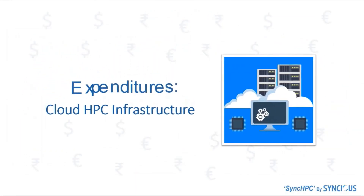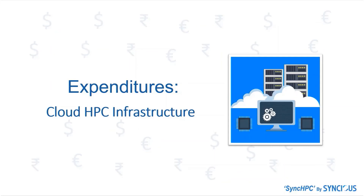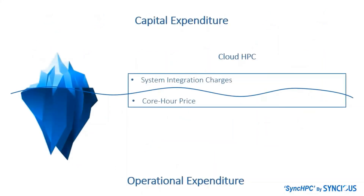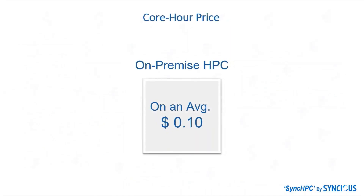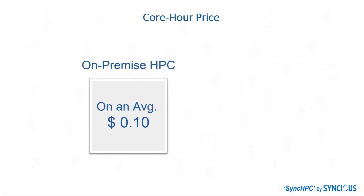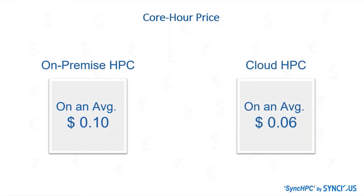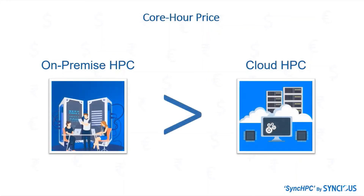Now understand the expenditure and other aspects of cloud HPC infrastructure. These are the only aspects of cloud HPC infrastructure's expenditure. After this complete discussion, you can compare the expenditures of on-premise HPC and cloud HPC infrastructure. We have already calculated the core per hour price for on-premise HPC. On the other hand, cloud HPC is an on-demand, pay-as-you-go service that could charge you around $0.06 per core per hour. By considering all the aspects, we can definitely say that cloud HPC could be 60% cheaper than on-premise HPC under some conditions.